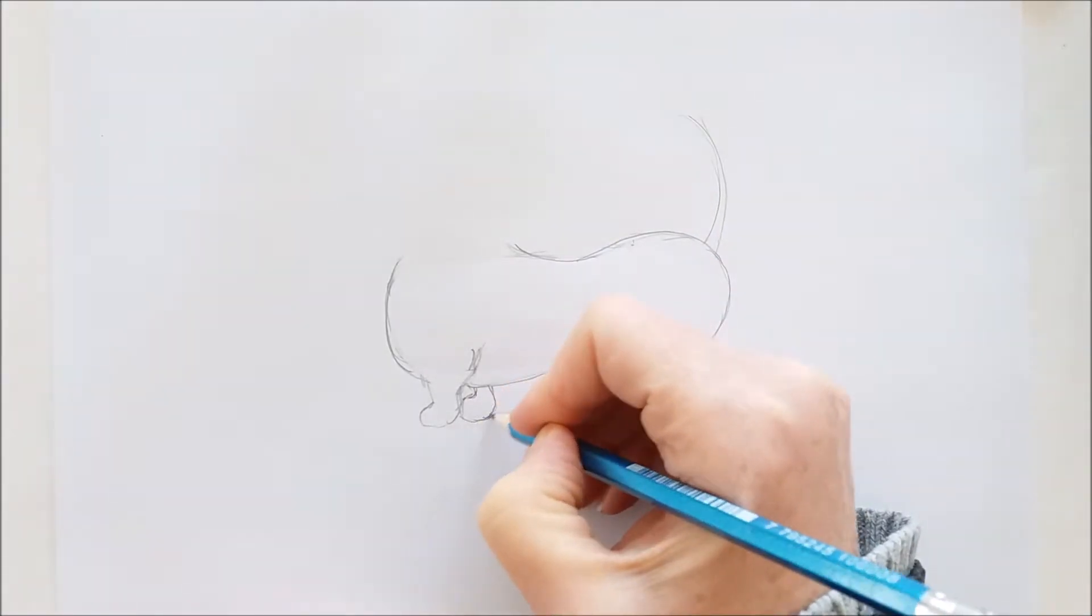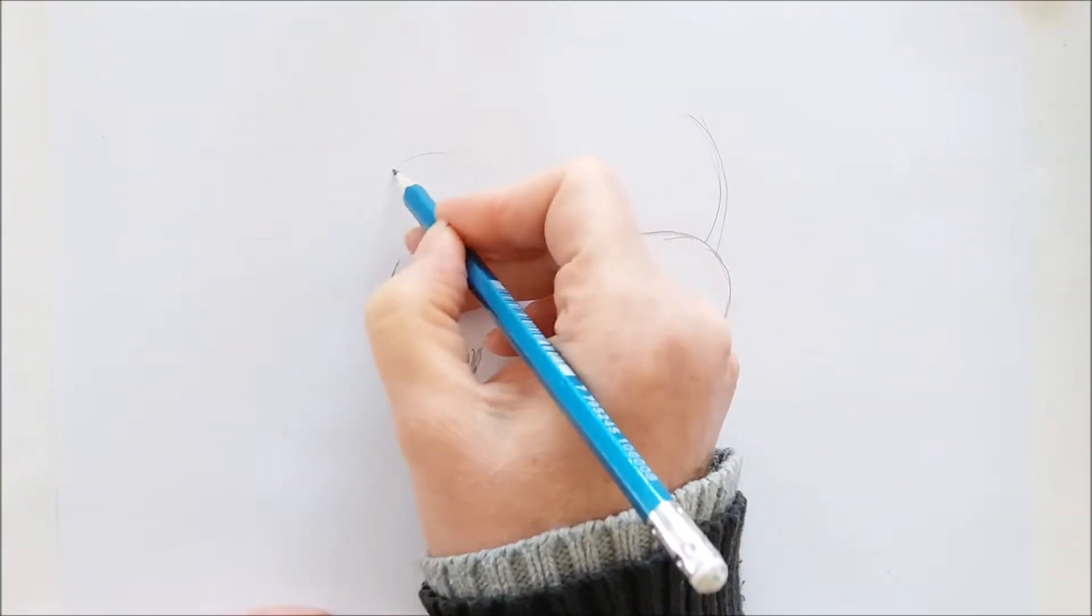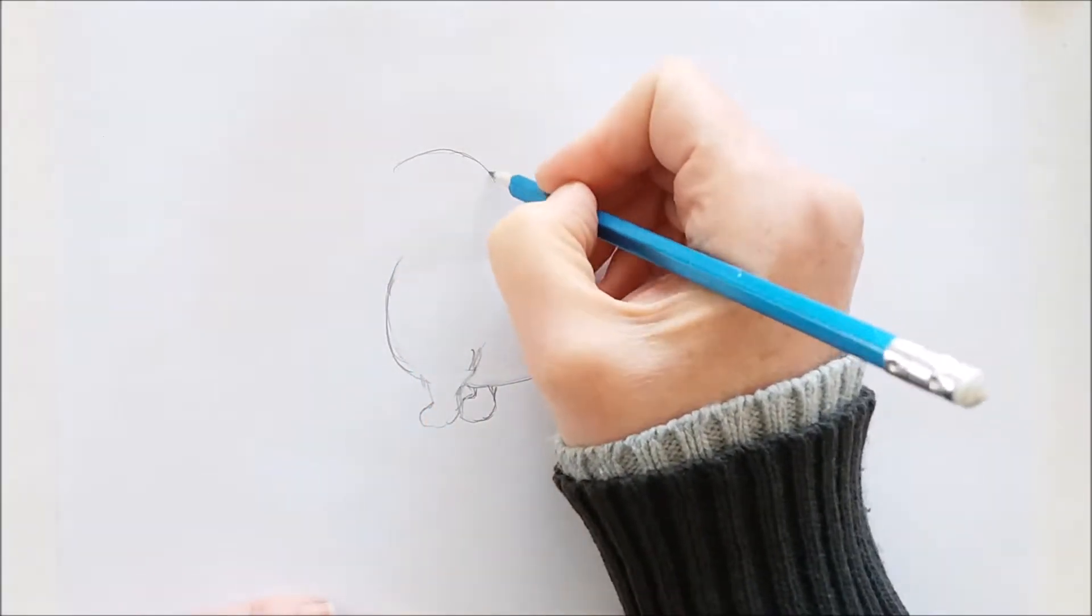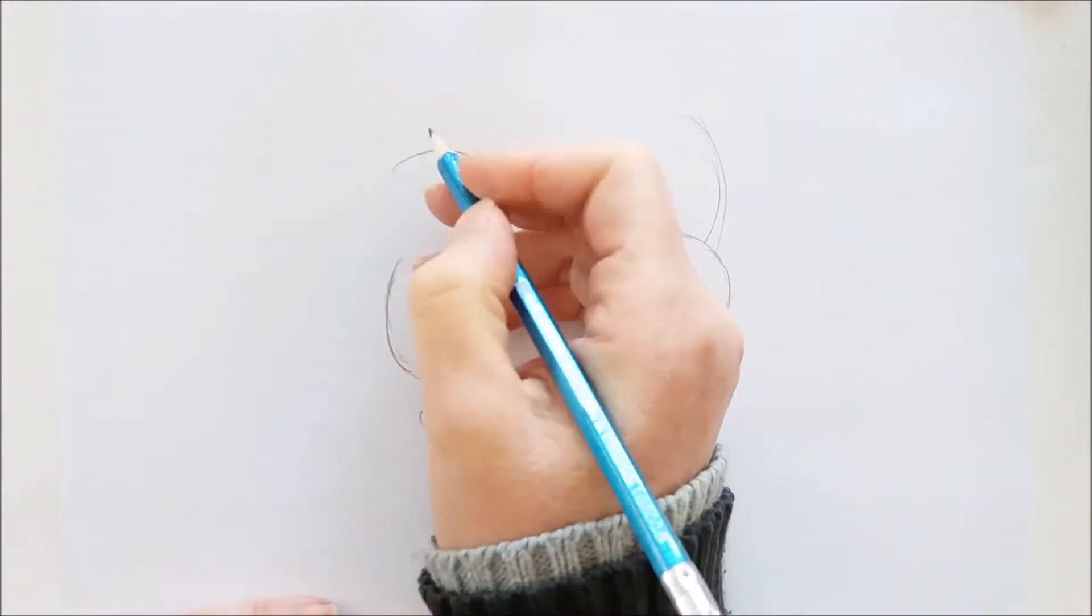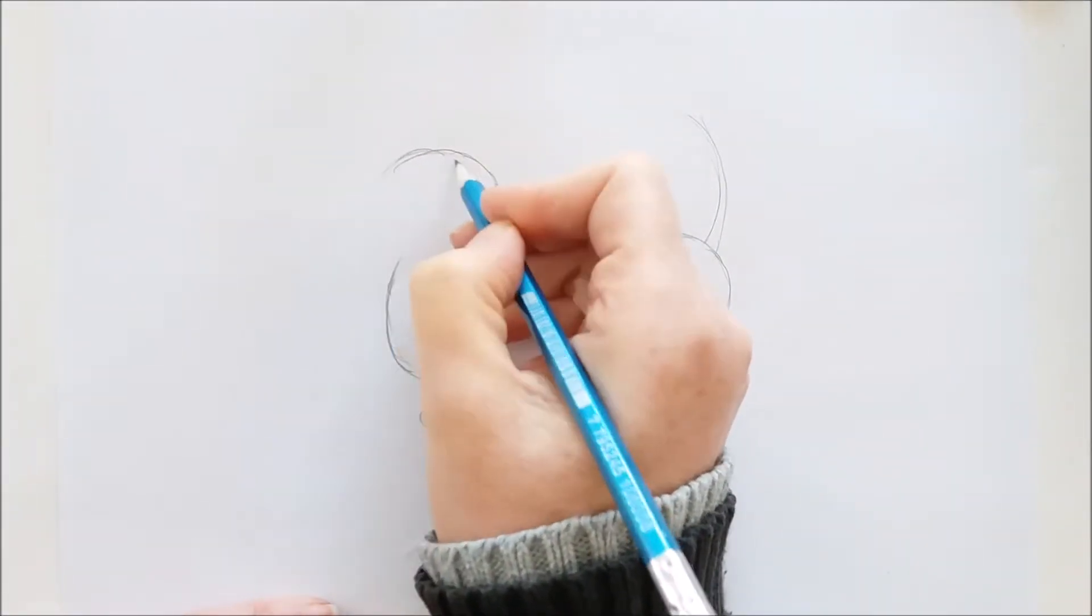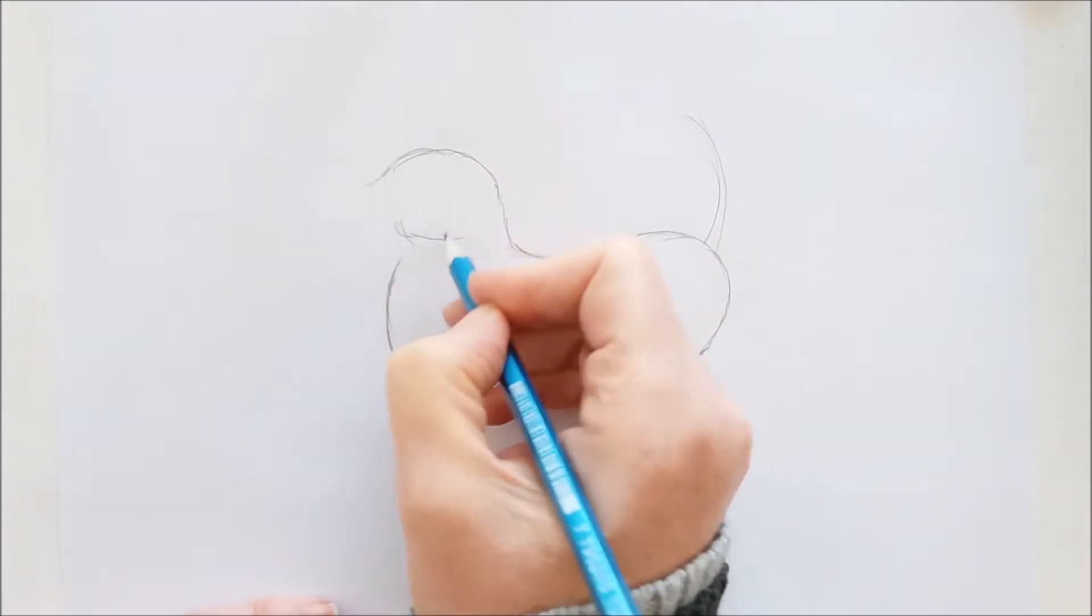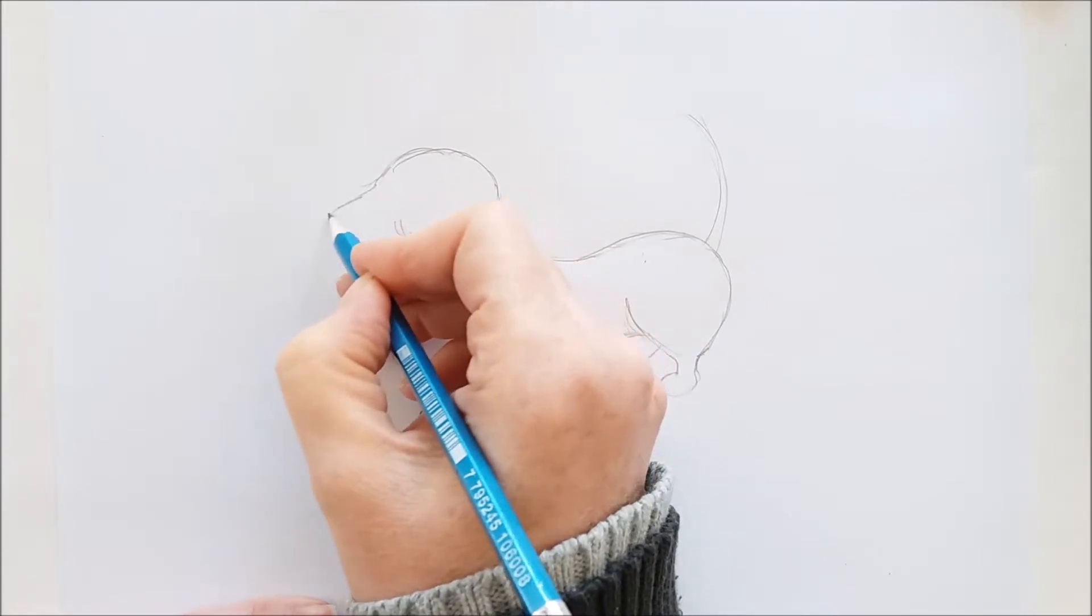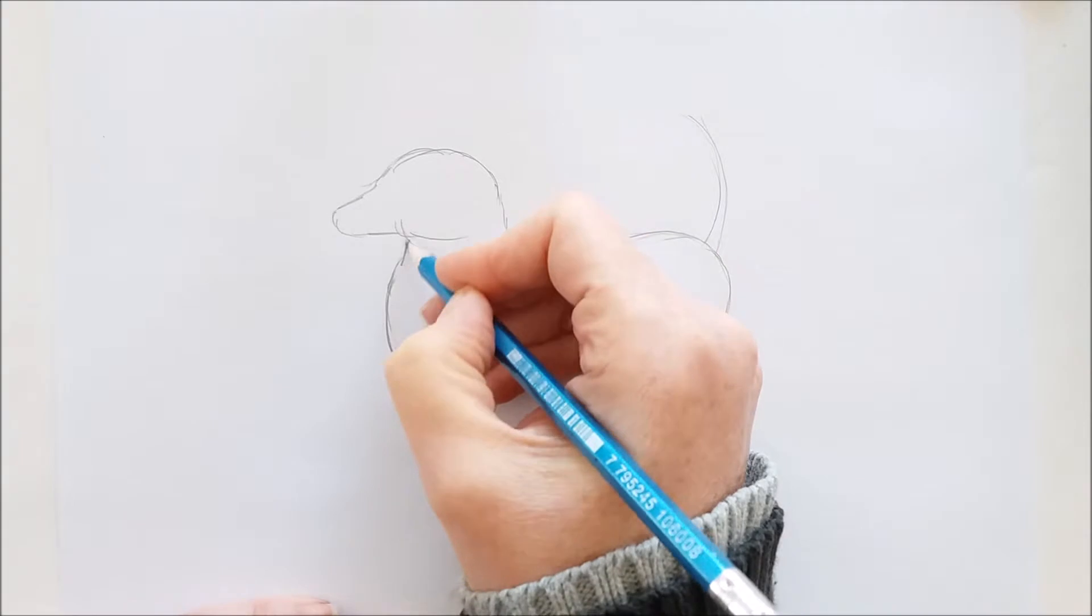Now the head is fairly simple to do. I'm just doing a curved line that goes all the way down and connects with the back. And then we'll draw a little line under the chin and the nose. It stretches out. Wiener dogs have long skinny snouts so that's how I've drawn the nose.